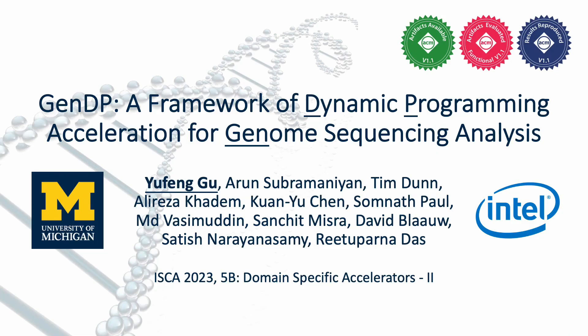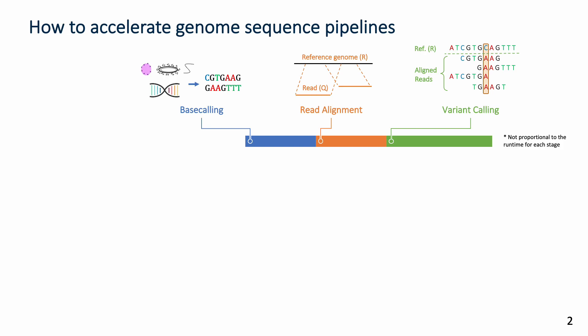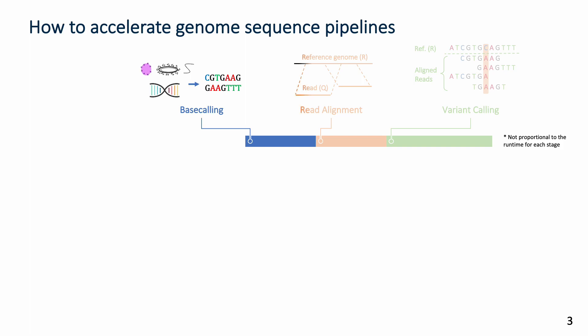Genome sequencing plays an important role in precision health. There are usually three stages to sequence a human genome: base calling, read alignment, and variant calling.